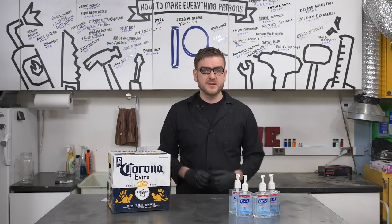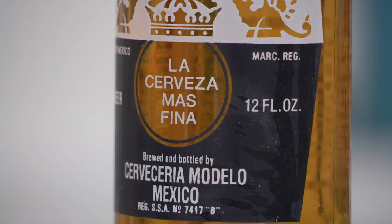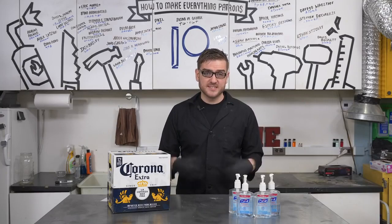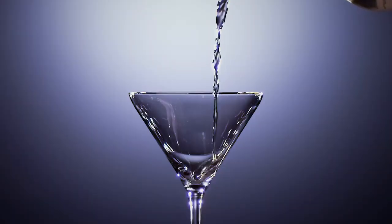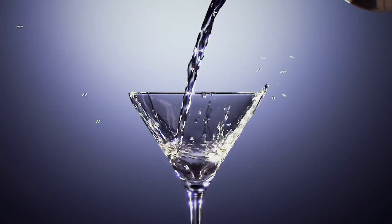Corona beer, like many light beers, has only 4.5% alcohol by volume, and that's not quite strong enough to actually disinfect anything. You need at least 60% alcohol. So we're going to need to do a process called distillation.